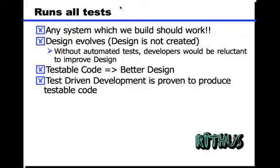Let's look at the first one, which is runs all tests. Everybody wants their system to work, so any system that we build should be satisfying the business requirements — and how do you assure that? That's through tests. Where automated tests like JUnits really help is that design evolves. The current thinking is that design cannot be created in one day; a design evolves over a period of time. This means you'll have constant changes in the system, and if you don't have proper automated tests, developers will be reluctant to change anything, because there is a high chance of introducing defects.